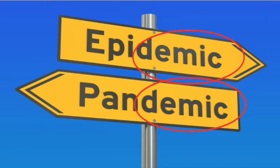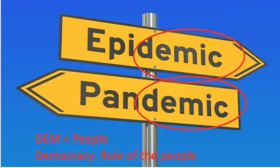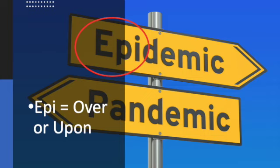Both epidemic and pandemic have that 'dem' root. The '-ic' at the end is something else, but 'dem' is actually a Greek root for people. For example, democracy — a democracy has to do with rule, so a democracy is to be ruled by the people. People vote, people have representatives, and it's the people that do the governing. So that 'dem' part of epidemic and pandemic has to do with people.